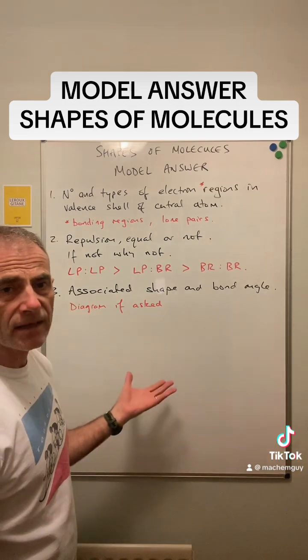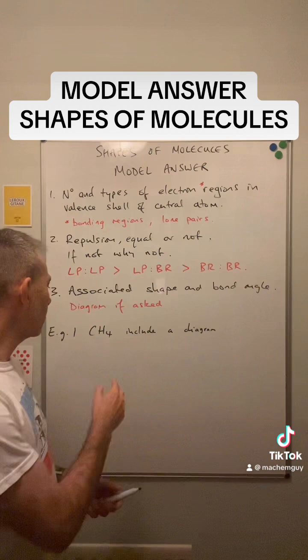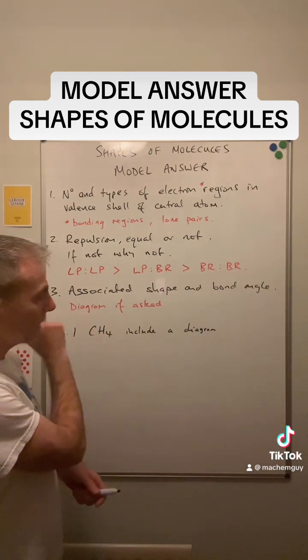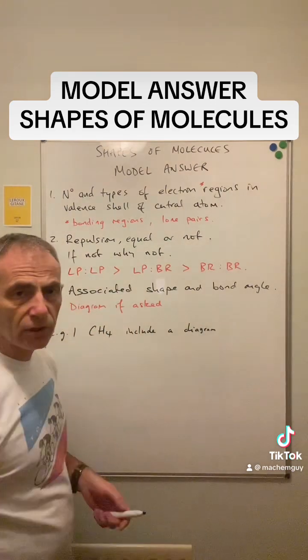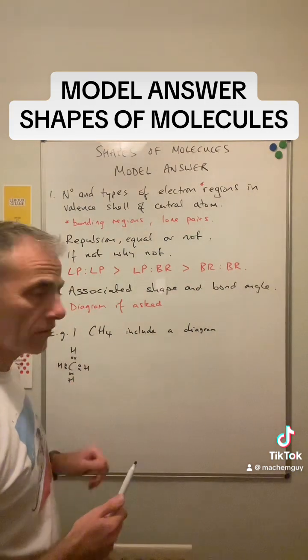So we'll look at a couple of examples now and put this into practice. The first example: imagine you're asked to give the shape and angle for the CH4 molecule and include a diagram. The first thing I would always advise my students to do is draw a very simple little dot and cross diagram.